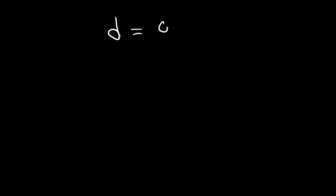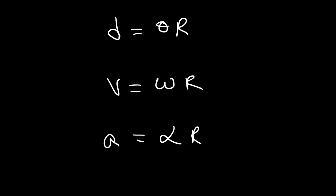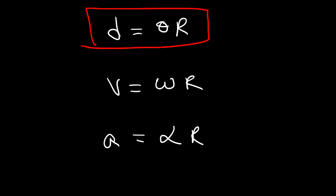There are some other equations to add to the list. First, linear displacement equals angular displacement times the radius — you may have seen this as arc length equals angle in radians times radius. Next, linear velocity equals angular velocity times the radius. And linear acceleration equals angular acceleration times the radius. Notice how similar these three equations are — make sure to add them to your list.